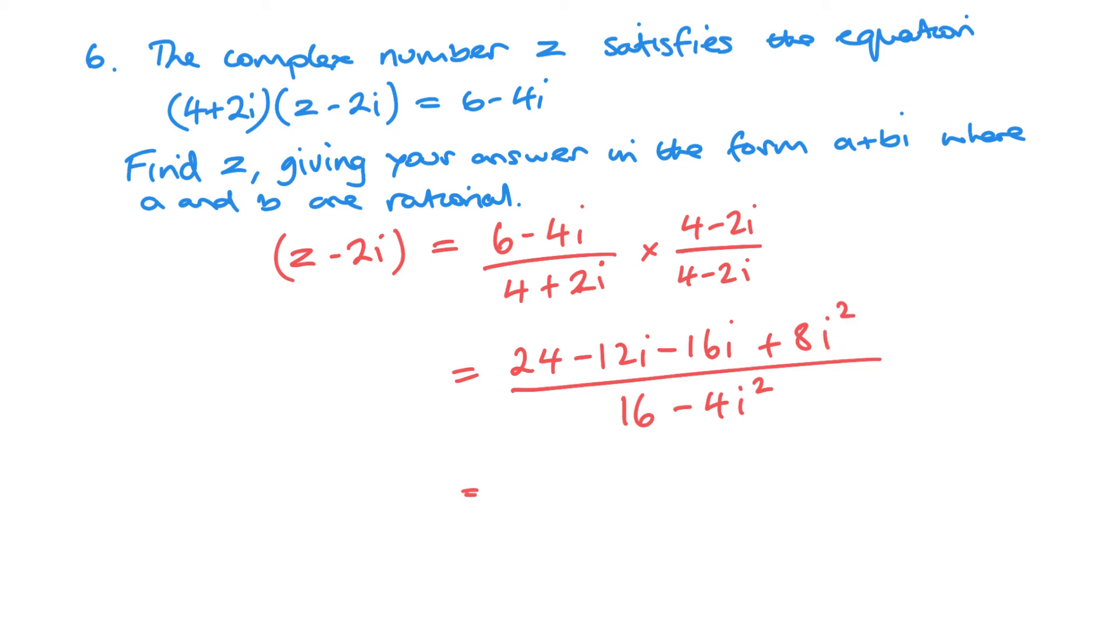So 24 minus 8. Then we've got minus 12 minus 16, so minus 28i. And then we've got minus 4i squared. So it's minus 4 times minus 1 is plus 4. So that's over 20. So we've got 16 over 20 and minus 28 over 20. And it's probably worth us simplifying this one here. So that should be 4 fifths minus 7 fifths i.